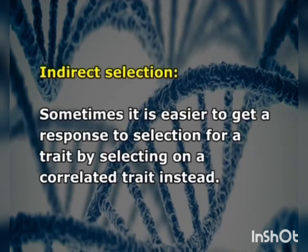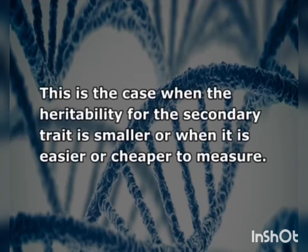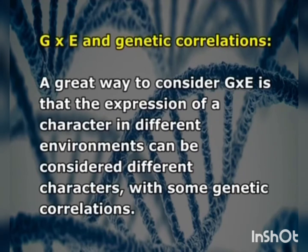For indirect selection, sometimes it is easier to get a response to selection for a trait by selecting on a correlated trait instead. This is the case when heritability for the secondary trait is higher or when it is easier or cheaper to measure. A great way to consider G×E interaction is the expression of a character in different environments, which can be considered as different characters with some genetic correlation.